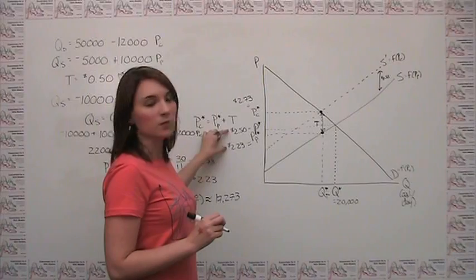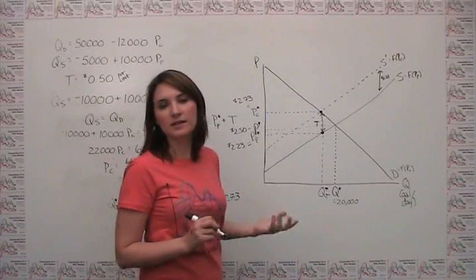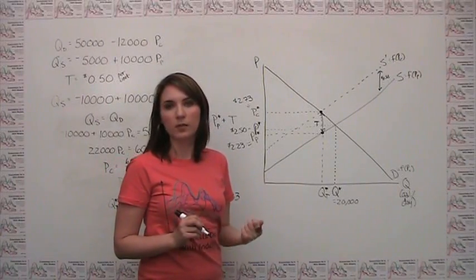Put another way, the producer is now getting $0.27 a gallon less than it used to because of the tax.